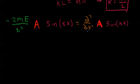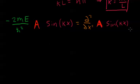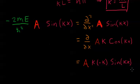When we take the derivative of the sine function, we get a cosine function, and then we have to do the chain rule and multiply by the derivative of what's inside. So the first derivative ends up being k times the cosine of kx. And then when we take the second derivative, the derivative of cosine is negative sine. So the overall effect is we get our wave function back multiplied by negative k squared.